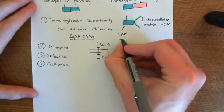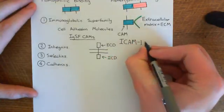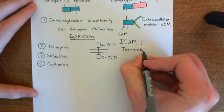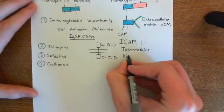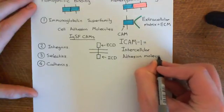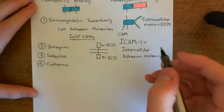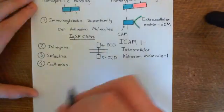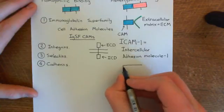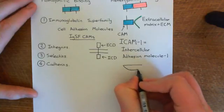The first example is ICAM-1, which stands for intercellular adhesion molecule 1. The role of ICAM-1 is that it's expressed on the apical membrane of endothelial cells when the tissue becomes inflamed or infected, driving the inflammatory response. As part of the inflammatory response, the endothelial cells of the blood vessels — specifically the capillaries and post-capillary venules — start expressing ICAM-1.